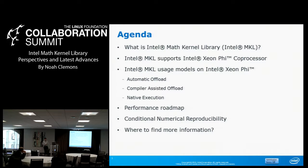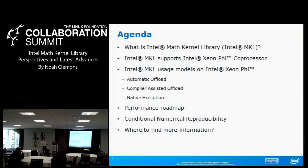How many of you have had different answers for different processors? How many of you have tried different vendors — AMD, Intel, and PowerPC — and gotten very different answers between processors? I'll explain how with this new Math Kernel Library feature you can enforce reproducibility not only run-to-run, not only between Intel processors, but even between AMD and Intel all in the same code base.